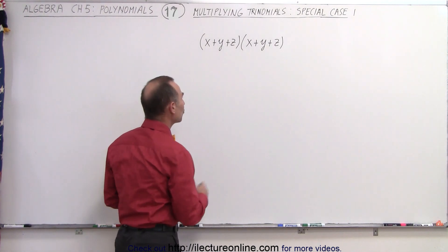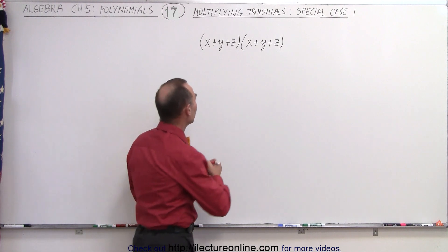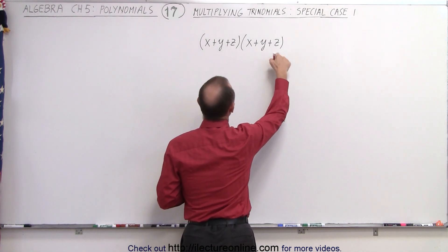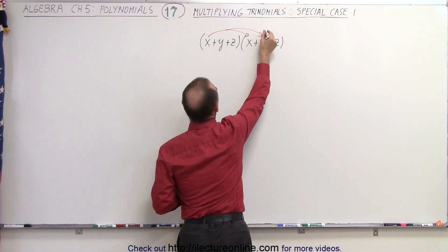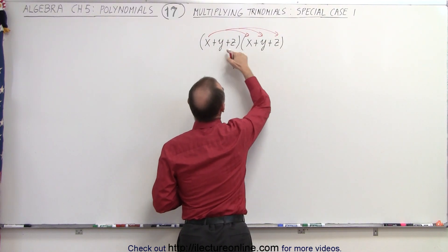So it's probably good to keep track of that using arrows. We're going to take our first term and multiply times each of the three terms in the second polynomial. There you go with three arrows.